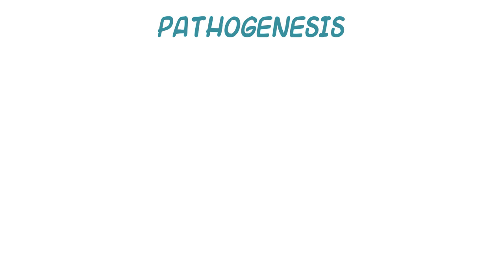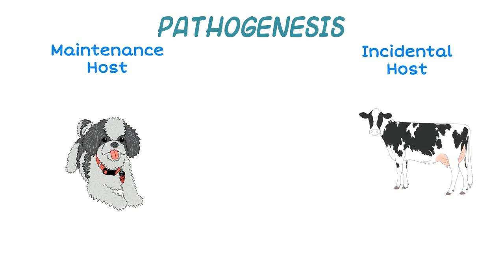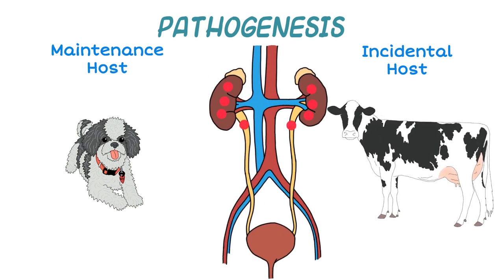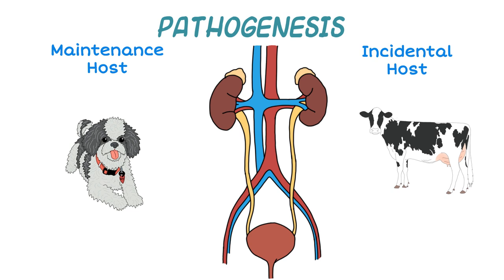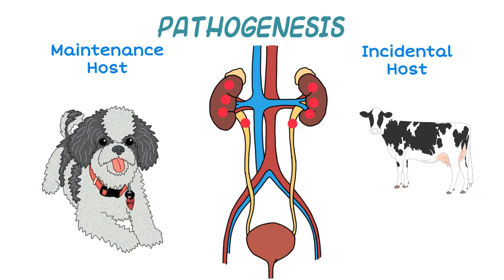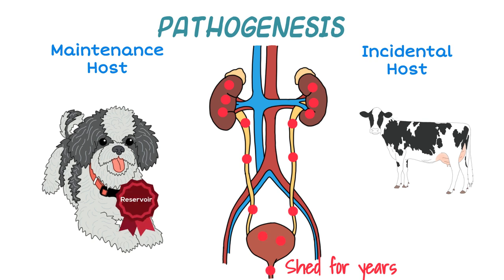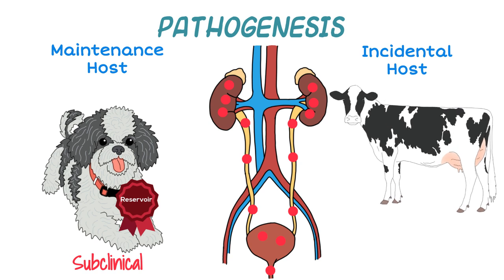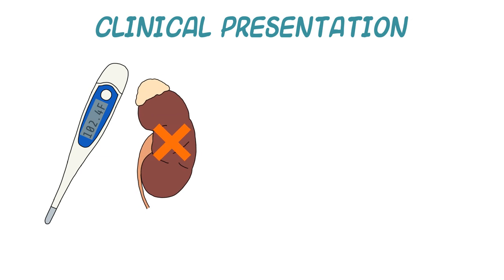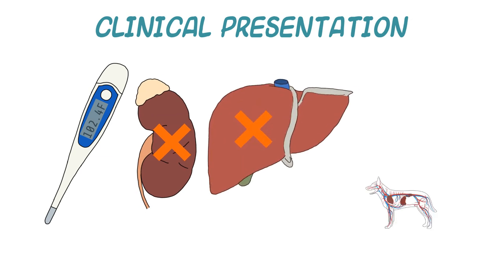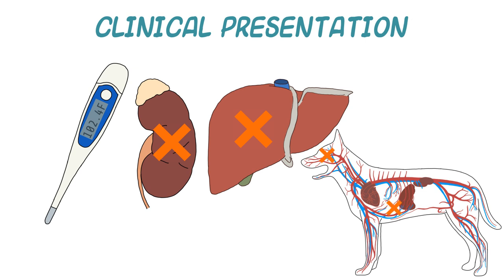Here is where the behavior of leptospires differs in a maintenance host compared with an incidental host. In an incidental host, leptospires remain in the renal tubules for a short period and are shed in urine usually no longer than several weeks. In maintenance hosts, however, the bacteria remain most often in renal tubules and the genital tract, and leptospires can be shed for as long as years after an infection, leading to their role as disease reservoirs. In maintenance hosts, infections are generally subclinical. However, in incidental hosts, lepto presents most often as an acute febrile illness characterized by damage to the kidney and/or liver. Other body systems may be affected, resulting in uveitis, pancreatitis, bleeding, hemolytic anemia, muscle pain, or respiratory disease.